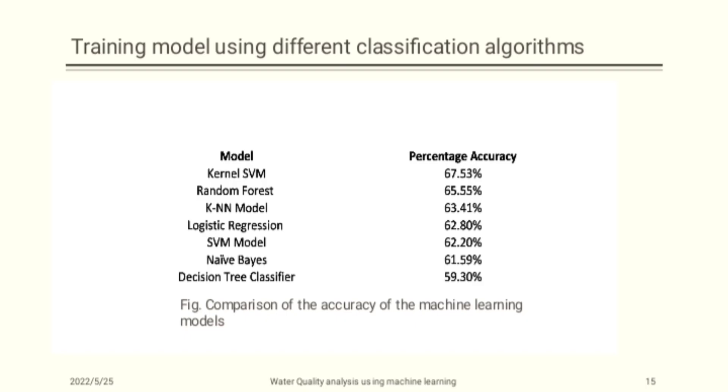Training model using different classification algorithms. Here are some models and their percentage accuracies. Support vector machine embedded model is designed for predicting the quality of water which has the accuracy of 62.20%, followed by naive Bayes model with the accuracy of 61.59%, and then the kernel SVM model with the accuracy of 67.53%. The kernel support vector machine with the radial kernel is the best performing algorithm with the highest accuracy than the other models.